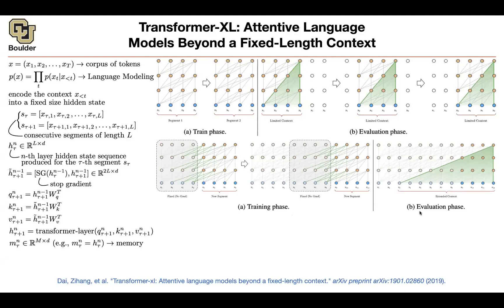That's during training. For evaluation, you have extended your context — it's not a limited context anymore. Why? Because these guys are paying attention to here, and then this guy is paying attention further back, and you can expand it. You can go from X3 up until X12. So you extended the context.